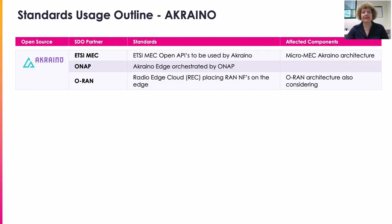For Akraino, the affected SDO partners haven't changed much in the last two years. For MEC it's ETSI MEC — the key ETSI MEC open APIs to be used by Akraino — and the affected components are micro-MEC and Akraino architecture. For ONAP, that's the edge deployment use case with Akraino-H being orchestrated by ONAP. And ORAN, of course, is radio edge cloud, placing and running network functions on the edge. The list hasn't changed much, but ORAN implementation has advanced quite well over the last two years, as has ONAP, leveraging new and extended standards.